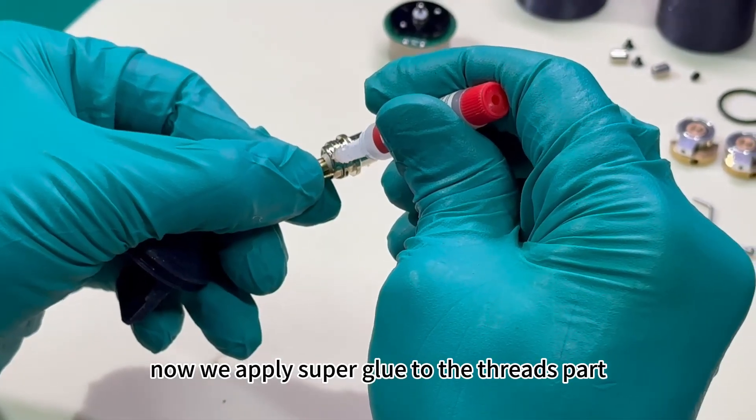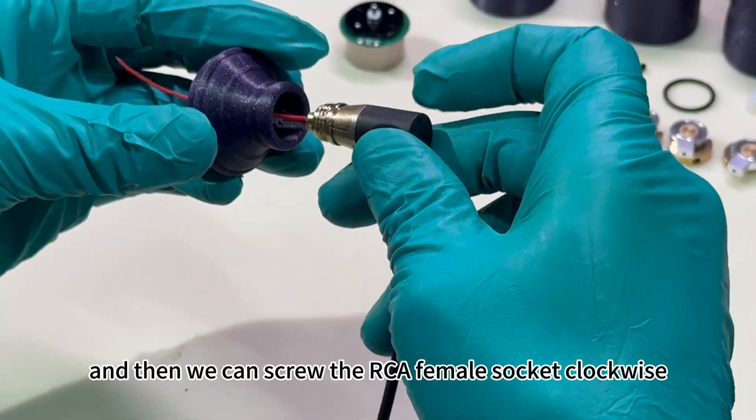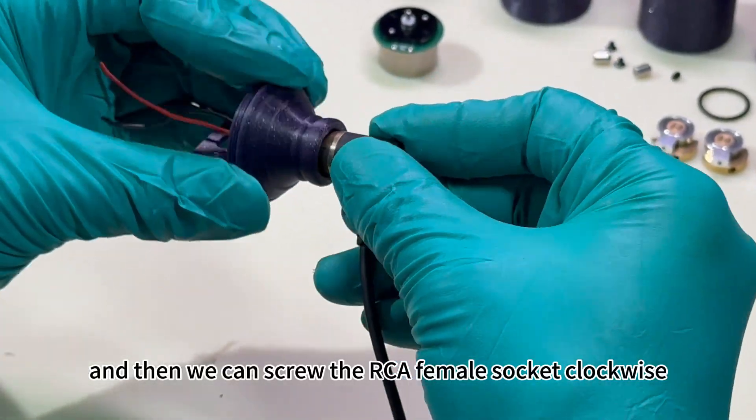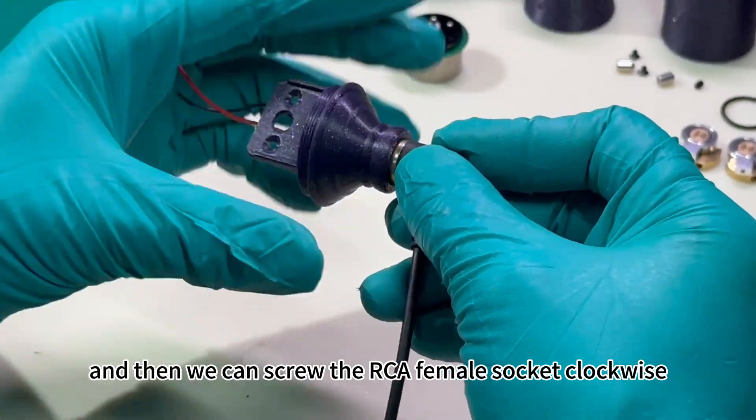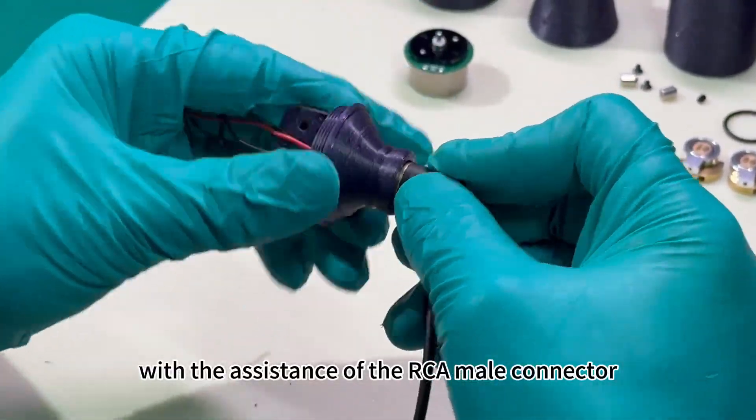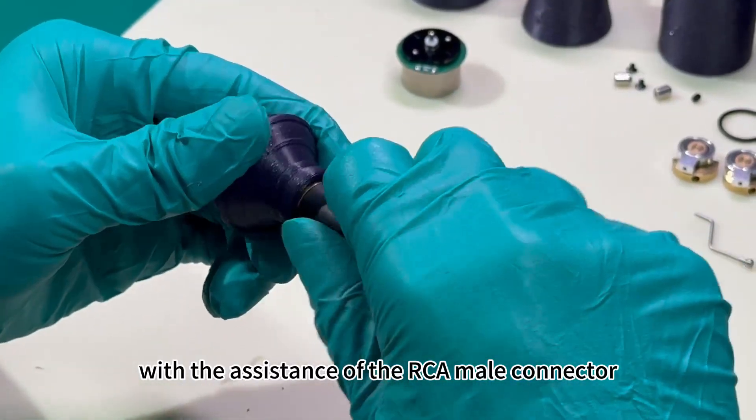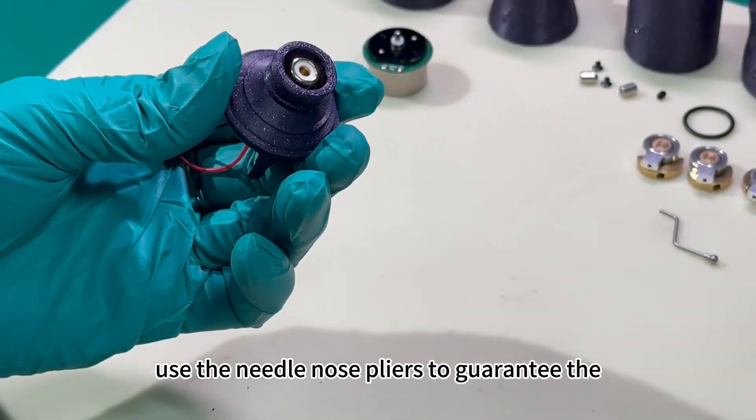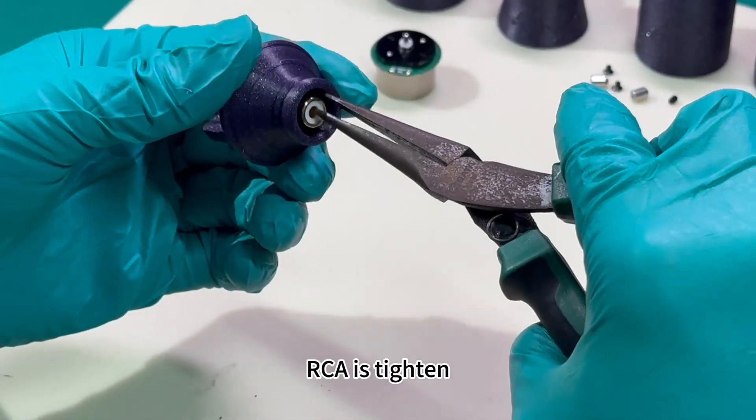Now we apply super glue to the threads. Then we can screw the RCA female socket clockwise into this part with the assistance of the RCA male connector. Use needle nose pliers to ensure the RCA is tightened.